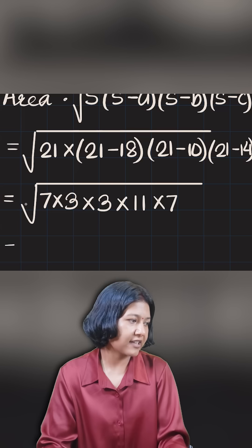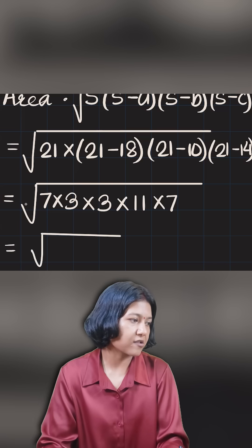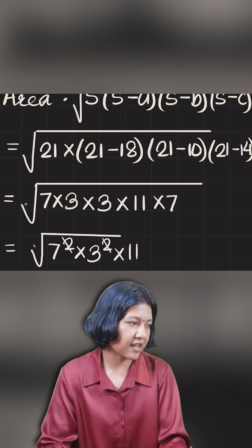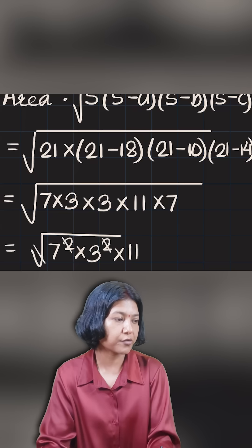Interestingly I have two 7s and two 3s, so I'm gonna write that as 7 square times 3 square times 11. Square root and square cancels out, 7 times 3 comes out of the root giving me 21.